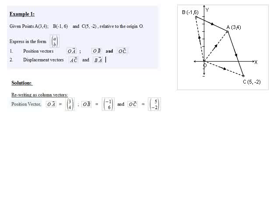The position vector OB is minus one over six, extracted directly from the coordinate of B. Similarly, OC is five over minus two. The next task is to find the displacement vector AC. Recall that to find a displacement vector, we identify the position vector at the end and the position vector at the beginning, then subtract them. So we identify the position vector at C and the position vector at A, and subtract to get the displacement vector AC.